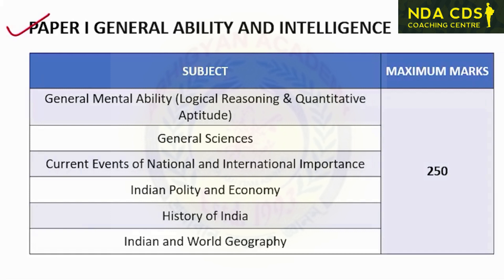Paper 1 is the General Ability and Intelligence Test, divided into six sections. The first subject is General Mental Ability, covering logical reasoning and quantitative aptitude including numerical ability and data interpretation. The second subject is General Sciences, including physics, chemistry, biology, biotechnology, and environmental sciences. The next subject is Current Events of National and International Importance, covering topics like culture, music, arts, literature, sports, and governance.